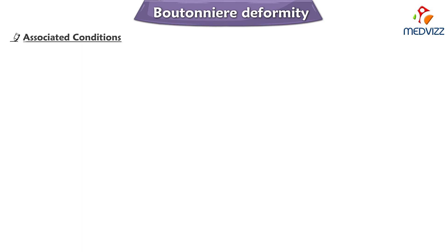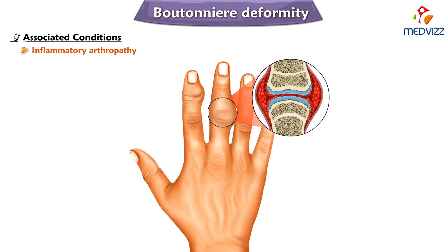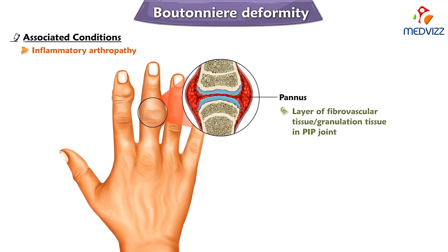What are the conditions associated with boutonnière deformity? Most often we see it in inflammatory arthropathy, for example rheumatoid arthritis. PANUS — a layer of fibrovascular or granulation tissue in the proximal interphalangeal joint — is most often present in rheumatoid arthritis and can damage the central slip tendon. PANUS may therefore be one cause of boutonnière deformity in rheumatoid arthritis.